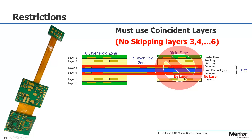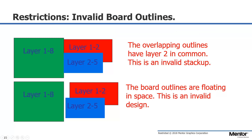A few closing remarks: board outlines must use coincident stack-up layers — for example, 2, 3, and 4 — and not skip layers like 2, 5, then 6. Stack-ups must share a side; they can't be floating. And finally, the route border must coincide with the correct board outline.